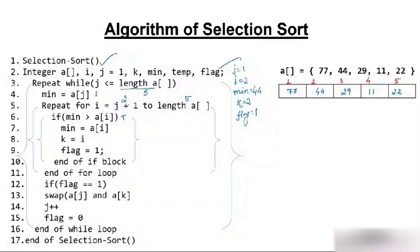We check: is flag equal to 1? Yes. So we swap a[j] and a[k] — that is, swap a[1] and a[4]. So 11 comes to the first position and 77 goes to position 4. The smallest element has taken its correct position. 11 is the minimum — it has taken position 1.